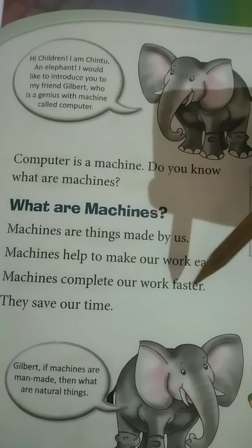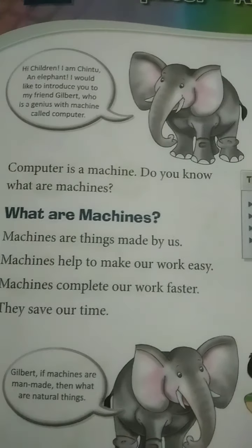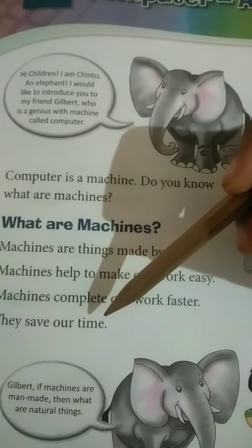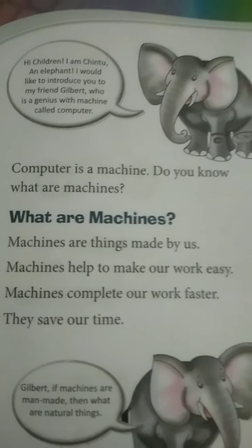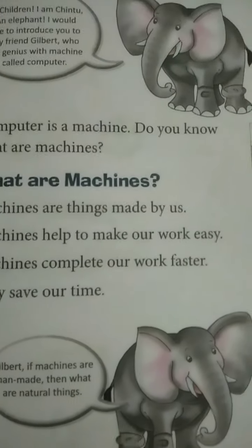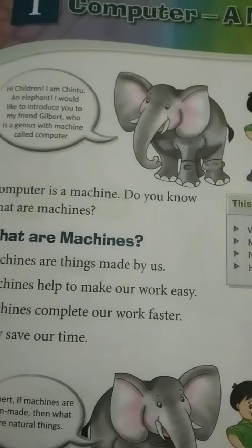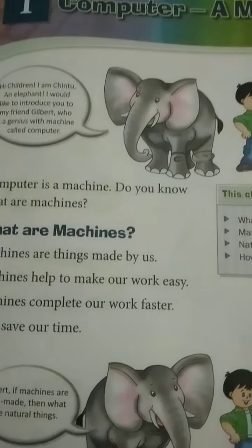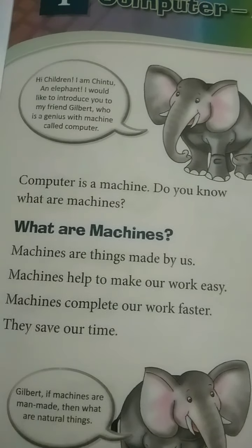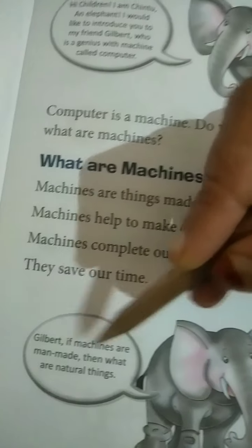Machines complete our work faster. Machine is made by humans — kis ne banai hai? Man ne banai hai, yani insaan ne banai hai. So Gilbert, if machines are man-made, then what are natural things?